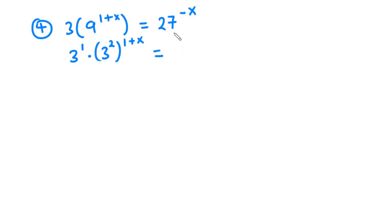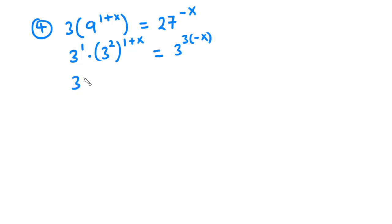Now 3 times 3 times 3 is 27. So we have 3 exponent 3 times negative x. Now let's simplify it further. So we are going to have 3 exponent 1 times, we are going to multiply 2 and then 1 plus x.